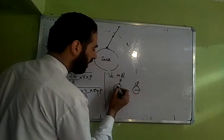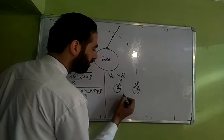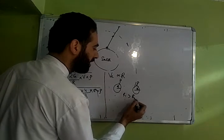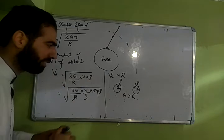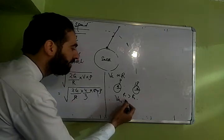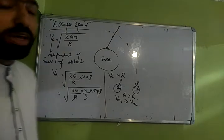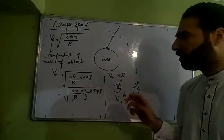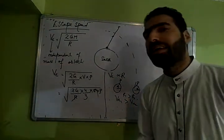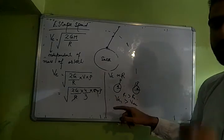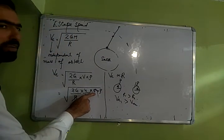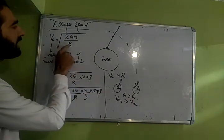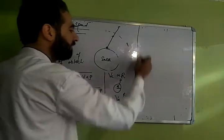When two planets possess same densities, then which one of them will have more escape speed requirement? The one whose radius is more kyunki yahan par relation direct aata jab density me aap nikle yahan par, varna yaha inverse form me.